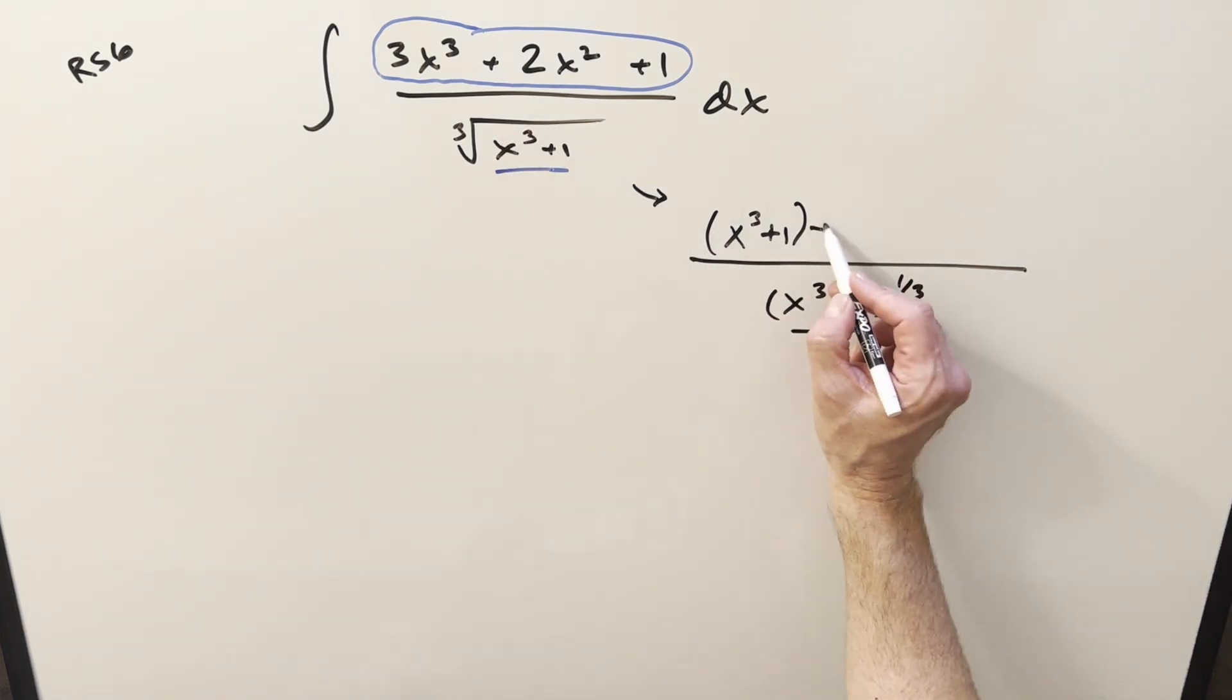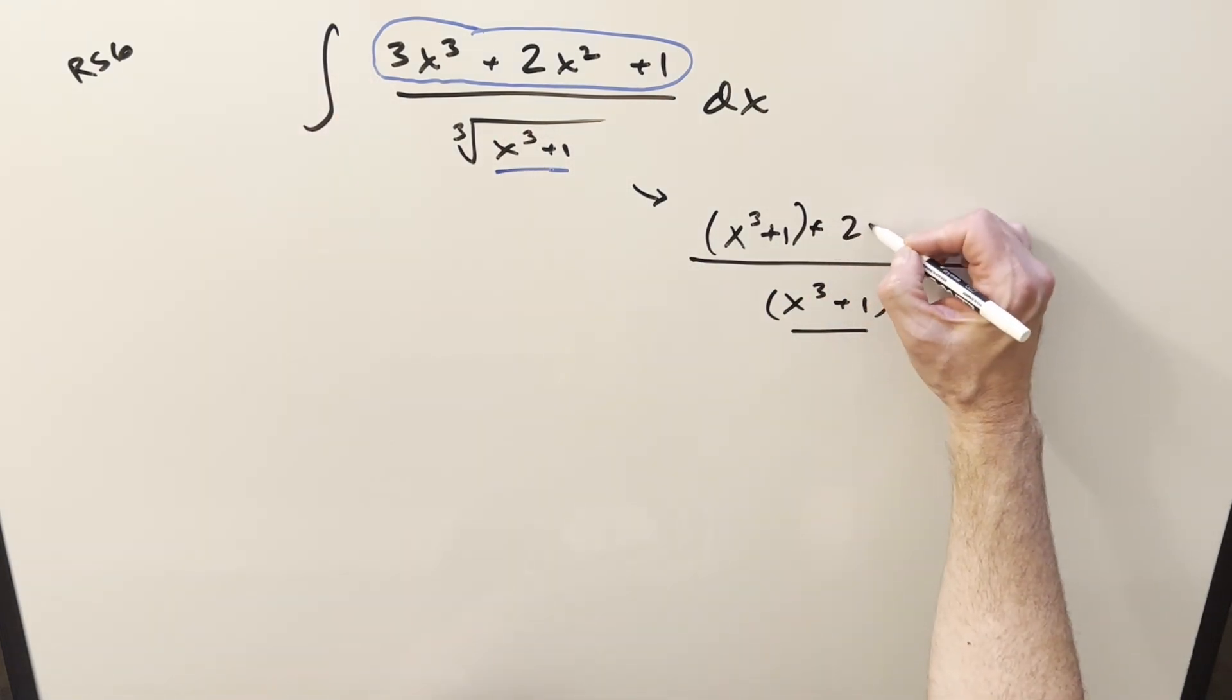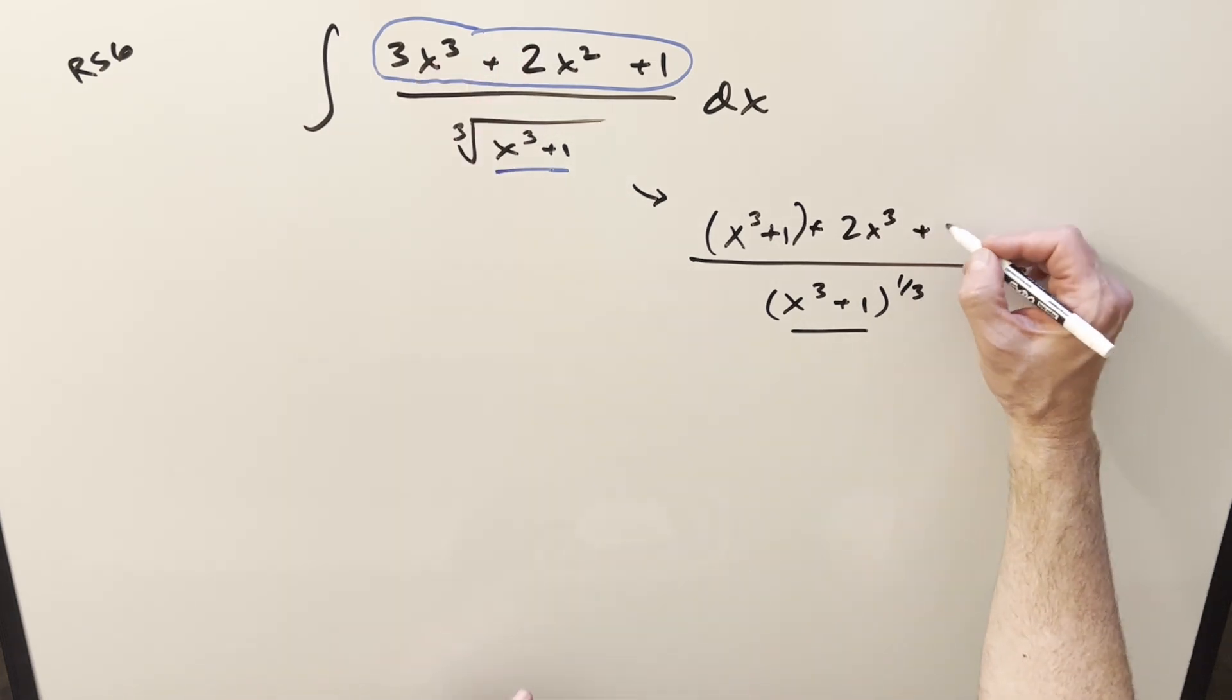And we'll separate this because I want this to work with this. And then let's see what's left. We're going to have, from here, we're going to have 2x cubed left. And from this one, we're going to have 2x squared.